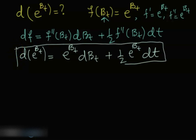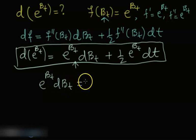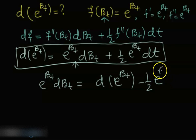And from this differential we can compute an integral of this as well. So you just rearrange this. First, e to the B_t dB_t is equal to d(e to the B_t) minus one half e to the B_t dt.